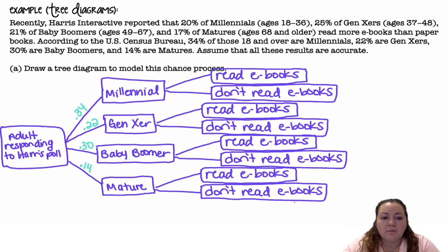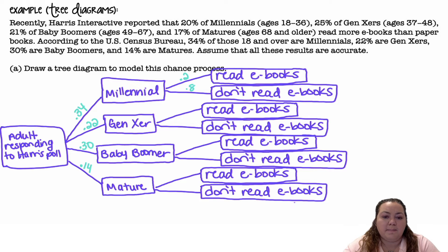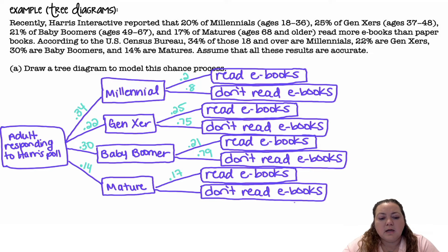Then, out of the Millennials, 20% of Millennials read more e-books than paper books. So read e-books would be 0.2 for Millennials, which means don't read more e-books would be 0.8. For Gen X, it was 25%, which means don't read would be 75% — just one minus that. Of the Baby Boomers, 21% read more e-books than paper books, which leaves 79% for paper books. 17% of Matures read more e-books than paper books, which leaves 83% — one minus 0.17 gives 0.83.